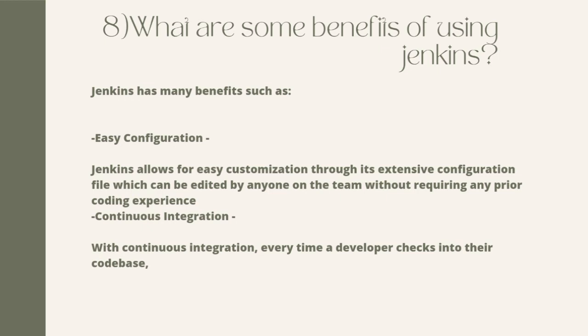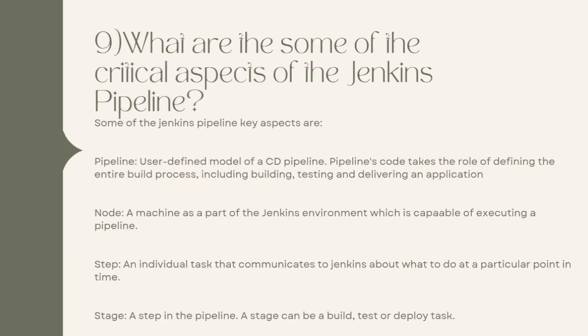Question 9: What are some of the critical aspects of the Jenkins pipeline? Some of the Jenkins pipeline key aspects are: Pipeline — a user-defined model of a CD pipeline. Pipelines take on the role of defining the entire build process, including building, testing, and delivering an application.